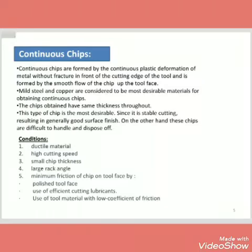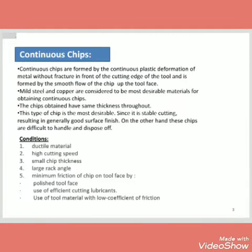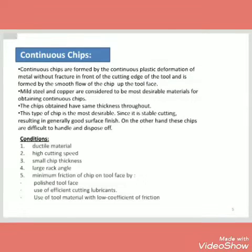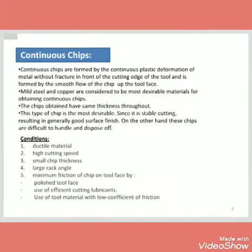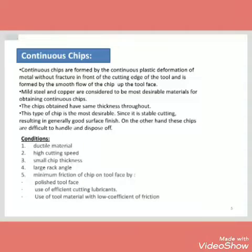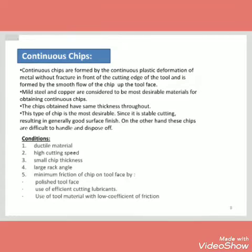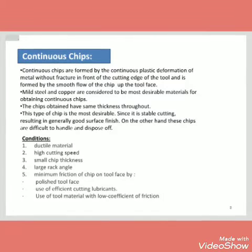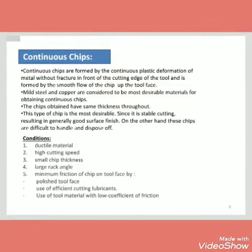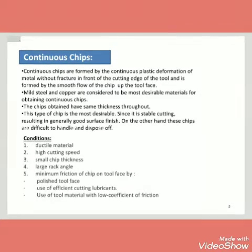The continuous chips are formed by the continuous plastic deformation of the metal without fracture in front of the cutting edge of the tool, and are formed by the smooth flow of the chip up the tool face. Mild steel and copper are considered the most desirable materials for obtaining continuous chips. The conditions for continuous chips are: ductile material, high cutting speed, small chip thickness, large rake angle, and minimum friction on the tool face by a polished tool face.